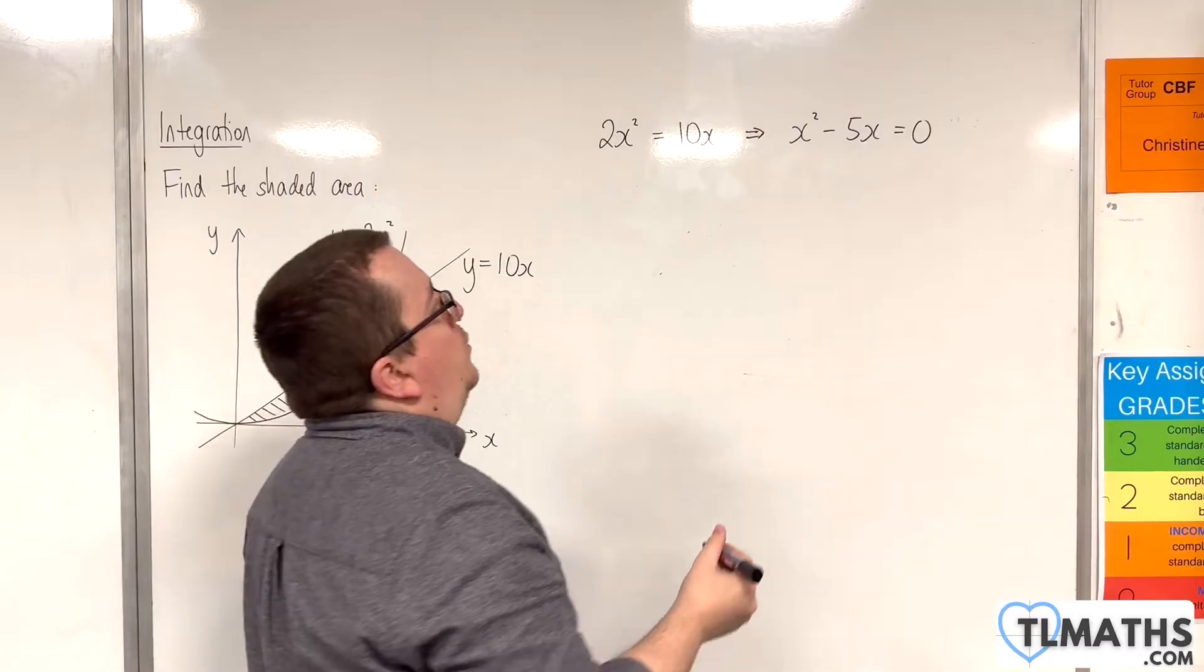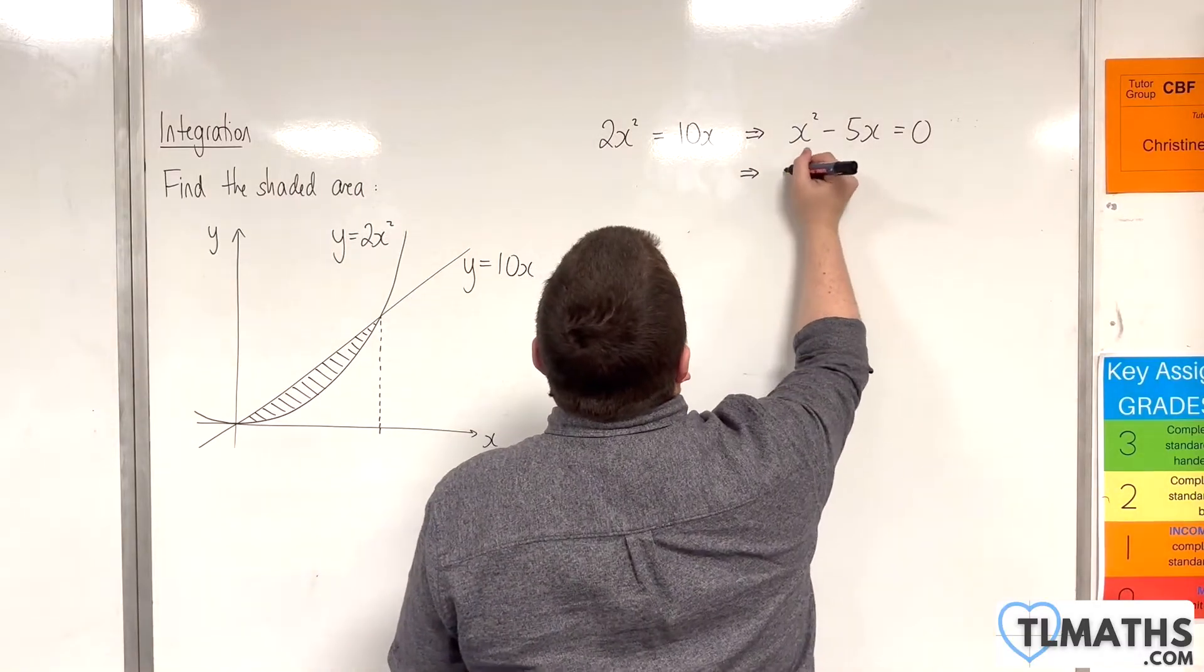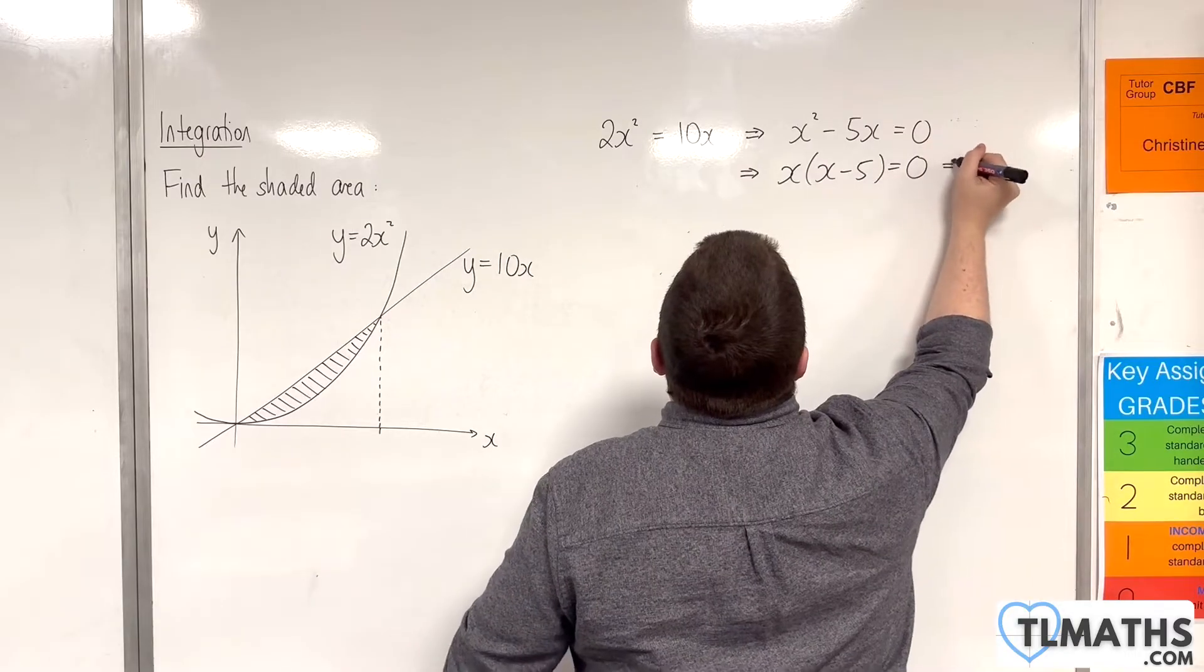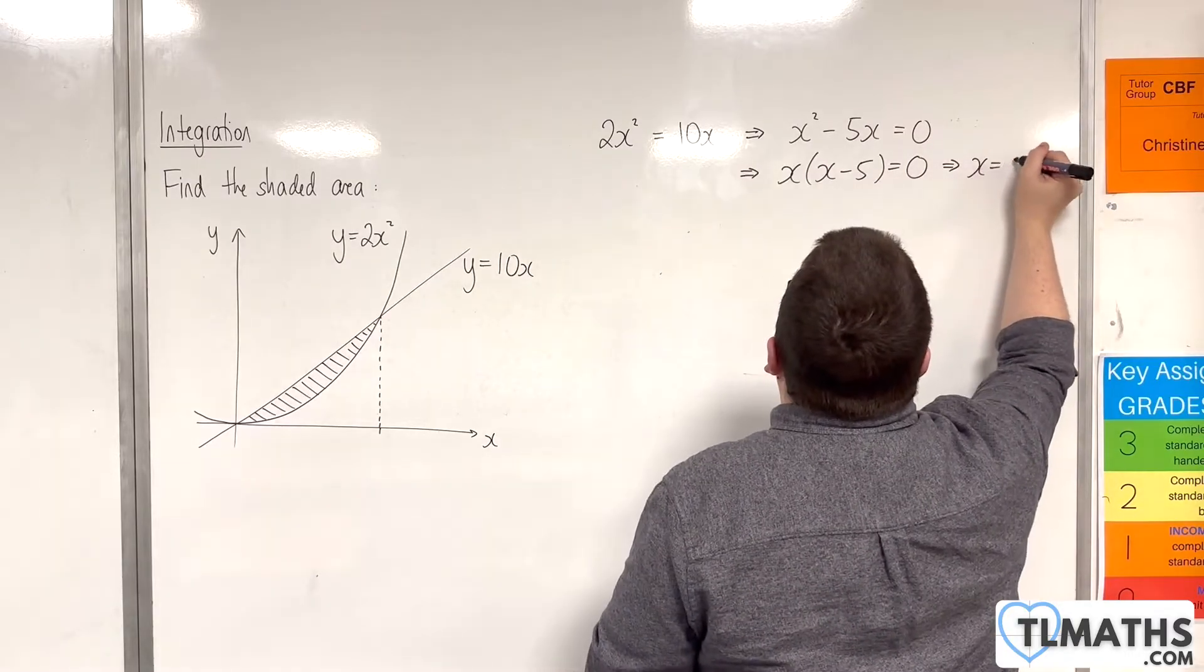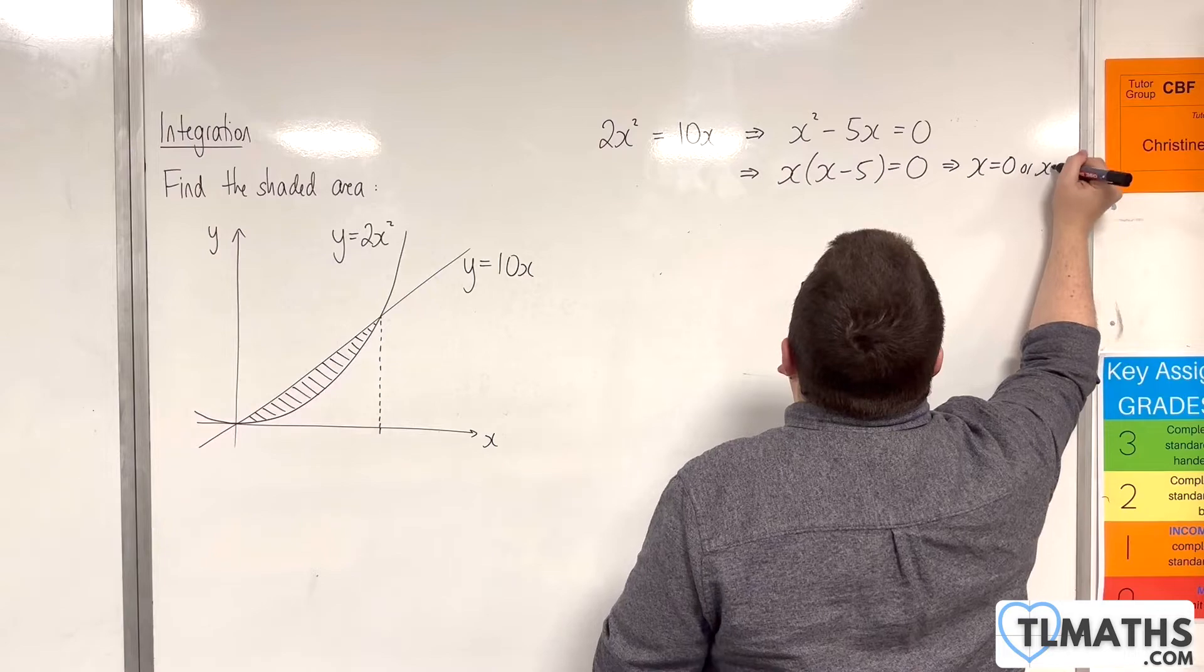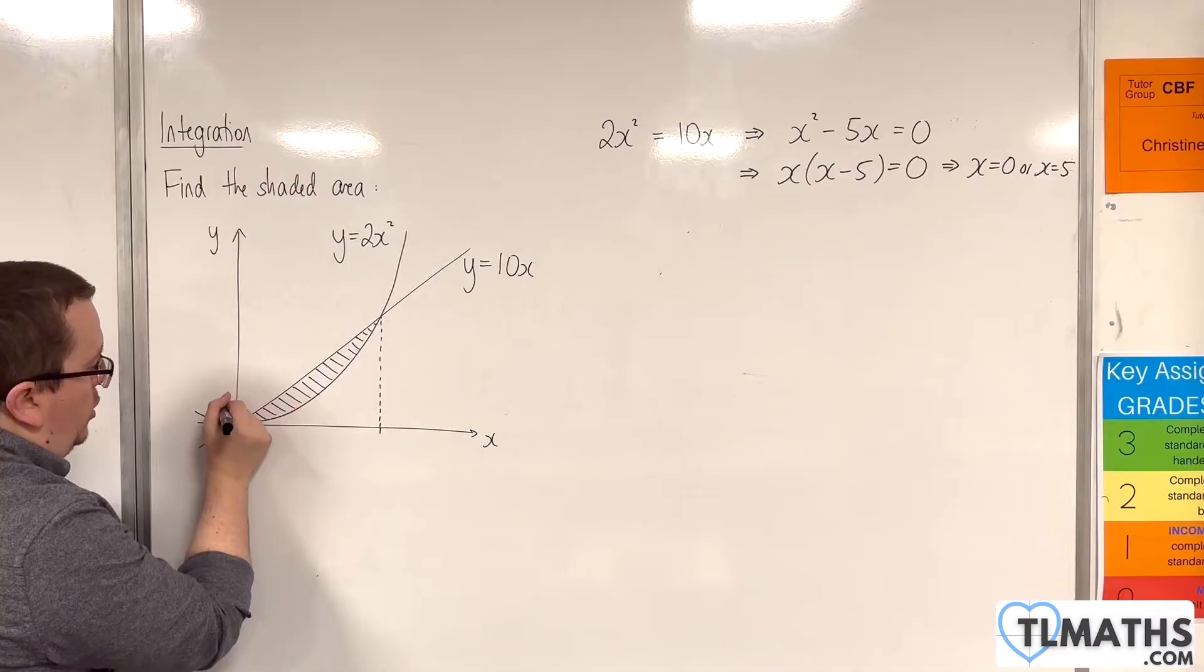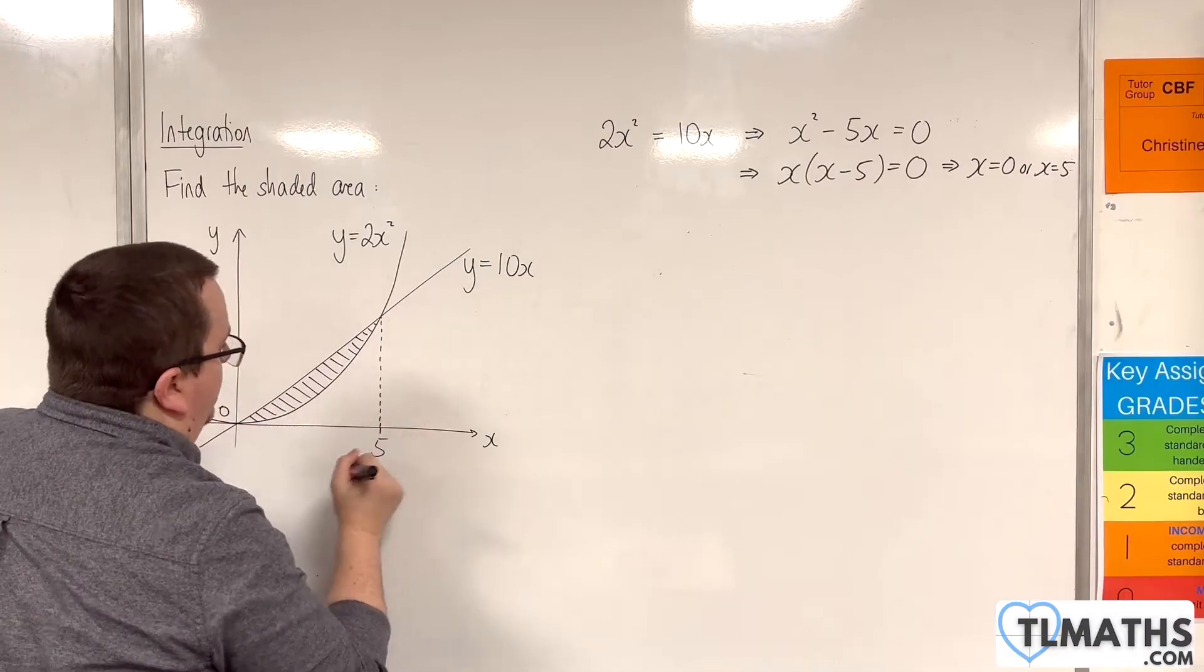Now that quadratic can be factorised. So x times x take away 5 is equal to 0. So that's telling me that x is 0 or x is 5. So the two points of intersection are at 0, so at the origin, and here at 5.